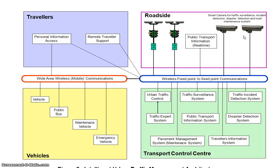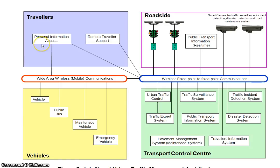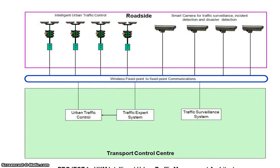We also have CCTV to observe traffic and detect incidents. In the control room we have several systems: traffic control, traffic surveillance, traffic incident detection, a traffic expert system, public transport information system, and so on. All the data can be accessed by travelers.